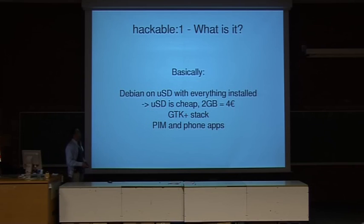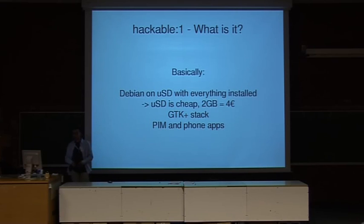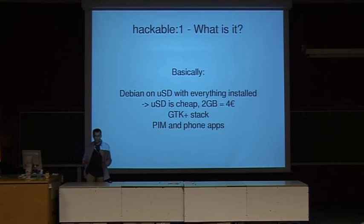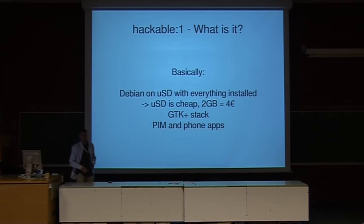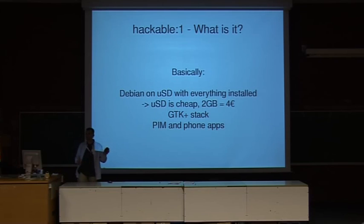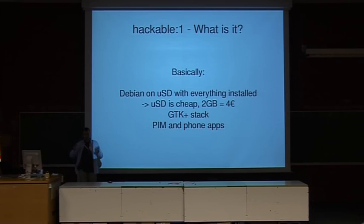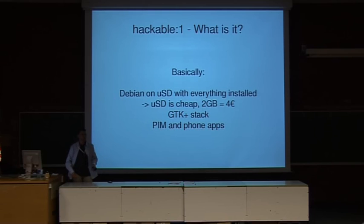The project is called Hackable One. Basically it is Debian on a micro SD card with everything already installed. On a desktop an apt-get install takes fifteen seconds, but on an embedded platform things are slow. So we put all the libraries on the micro SD card — we use the two gigabytes of space — so when you do development there's no 'this header is missing' or 'this library is missing'. Everything is there, just start development.